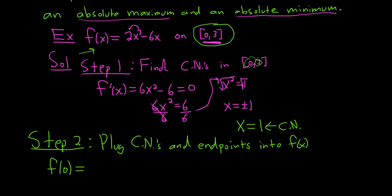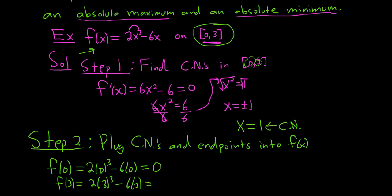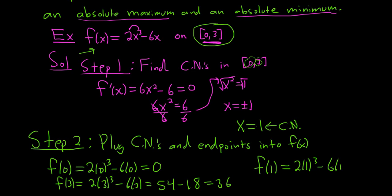Let's calculate: f(0) = 2(0)³ − 6(0) = 0. For f(3): 2(3)³ − 6(3) = 54 − 18 = 36. And for the critical number, f(1) = 2(1)³ − 6(1) = 2 − 6 = −4.